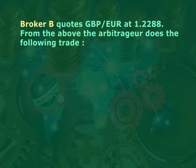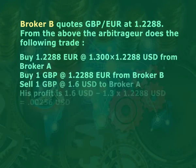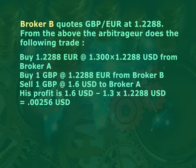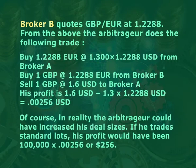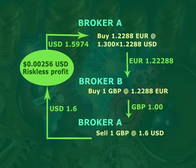Suppose broker B quotes GBP/EUR at 1.2288. The arbitrator does the following trade: buy 1.2288 euros at 1.30000 — costing 1.2288 US dollars — from broker A; buy 1 GBP at 1.2288 euros from broker B; sell 1 GBP at 1.60 US dollars to broker A. His profit is $1.60 minus 1.30 × 1.2288 = $0.00256. If he trades standard lots (100,000 units), his profit would be 100,000 × $0.00256 = $256. The cash flows are shown on screen.